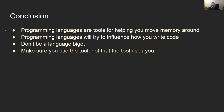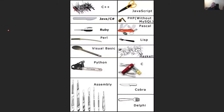In conclusion: programming languages are tools to help you move memory around. They will try to influence how you write your code and should be used in different situations. Don't be a language bigot — don't fall into the trap that I did. Lastly, make sure that you are using the tool and not that the tool is using you, because it's very easy to fall into the tool using you instead of the other way around.